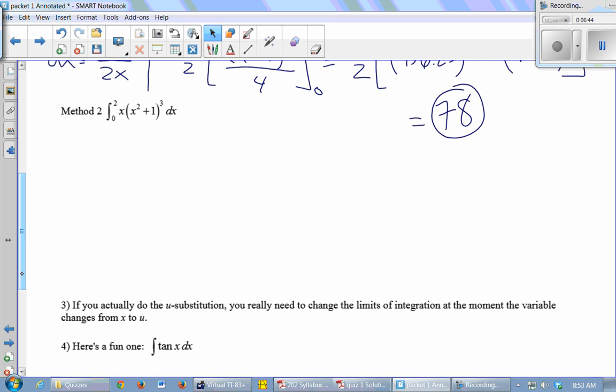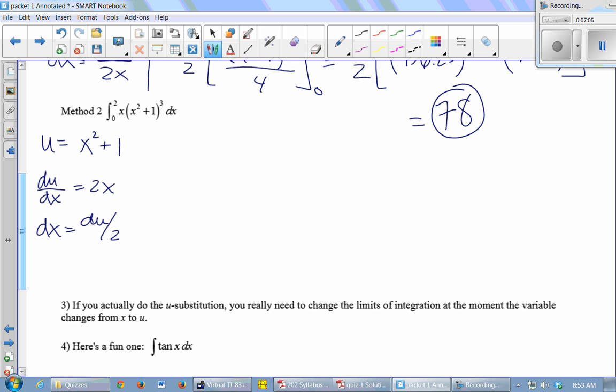Okay, here's the good way, the correct way to not have the notation mix up. All right, so same thing. We're going to let u be x² + 1. du/dx is 2x, which makes dx du over 2x. Now think of u as a function of x. This is u(x), right? So for any x value I could get a corresponding u value.